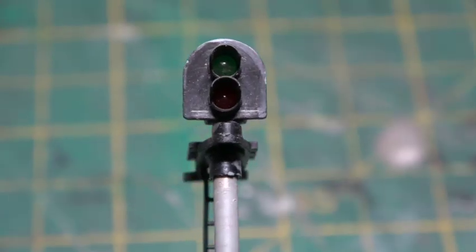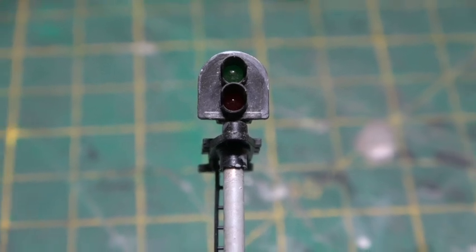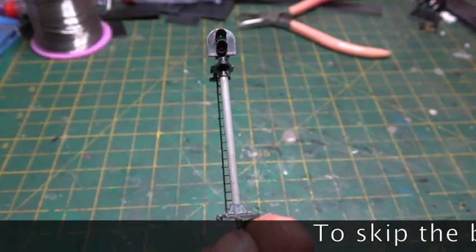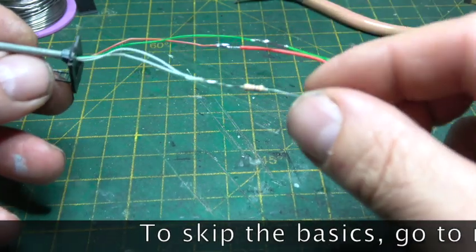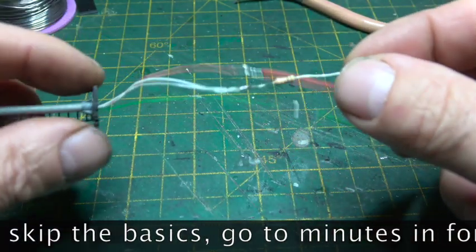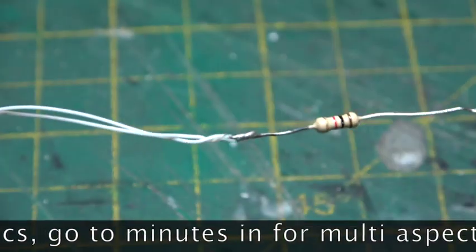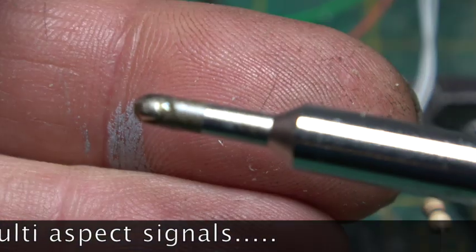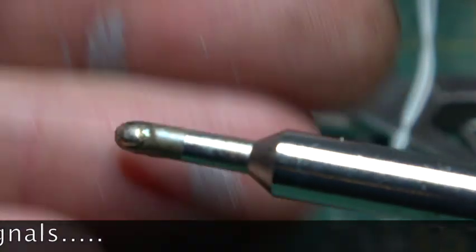Right, signals on straight track, no points involved. I'll use these econ signals that I've had laying about. We'll do a build video on these in the future, but for now this is just going to be an easy straight track operational one. We'll start off easy, this one's just a red and a green.